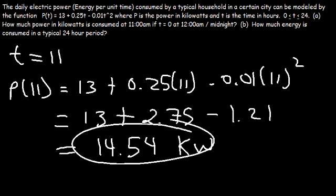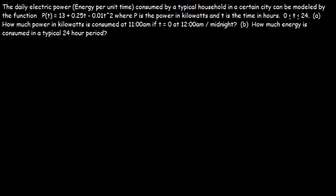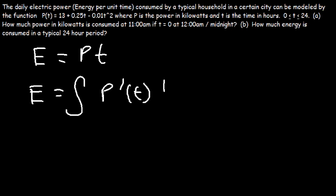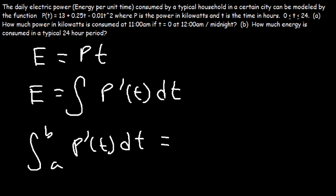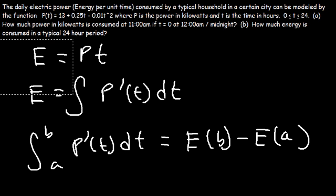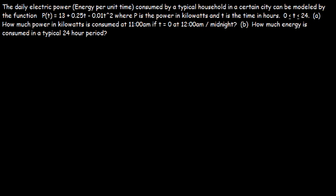But now let's focus on part B. How much energy is consumed in a typical 24-hour period? Energy is power multiplied by time. So if you have a function for power, energy is going to be the integration of p'(t) dt. Now if you want to find the net change, or how much energy is consumed, it's p'(t) dt evaluated from a to b, and this is going to equal E(b) minus E(a), which will give us the amount of energy consumed in a typical 24-hour period.